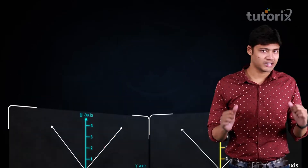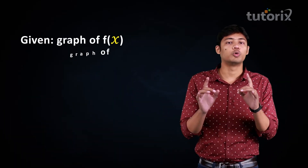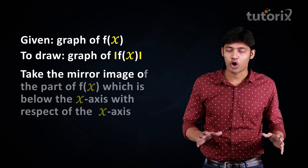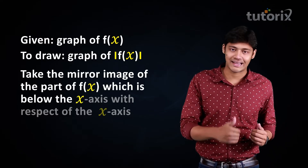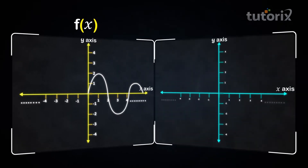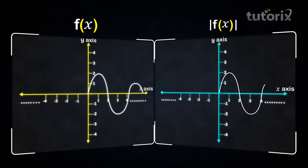Similarly, if the graph of any function f(x) is given and we are asked to draw the graph of |f(x)|, we simply take the mirror image of the part of the graph that is below the x-axis with respect to the x-axis, while the part above the x-axis remains as it is. This is how we draw the graph of |f(x)| when the graph of f(x) is given.